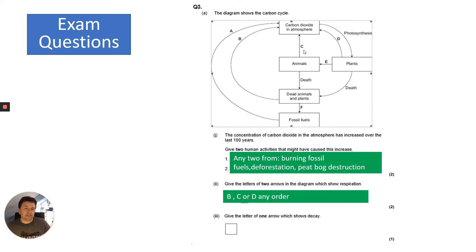B is from microbes, C is from animals respiring, and D is from plants respiring, and they all release CO2. Then it says give the letter of one arrow which shows decay. That will be B, because dead animals and plants are decayed, and that would be the correct answer.